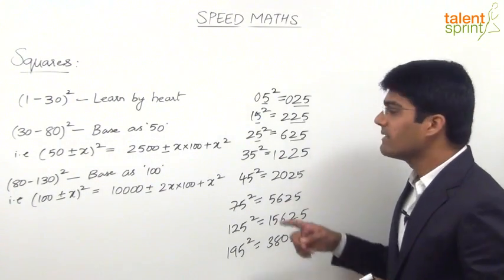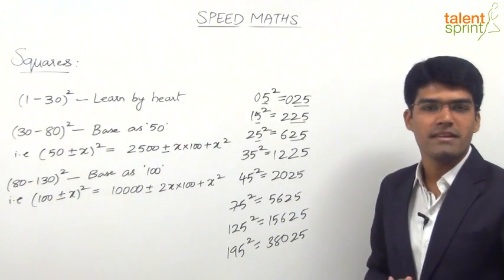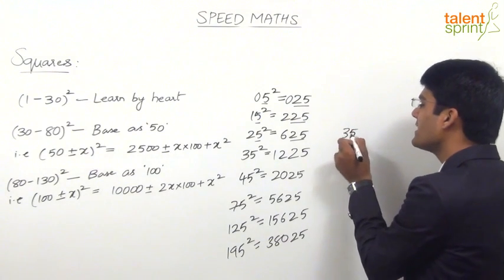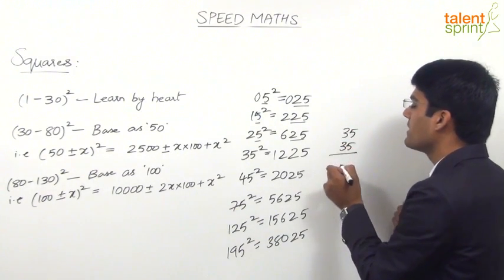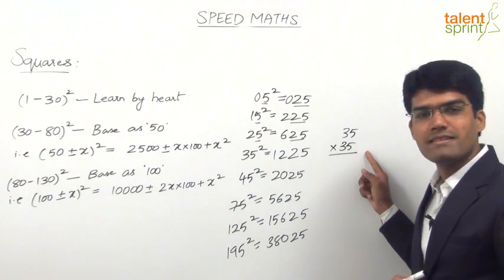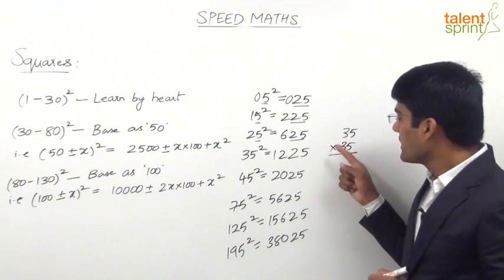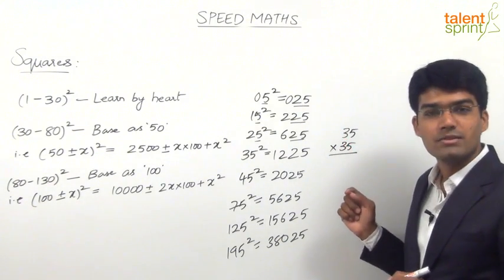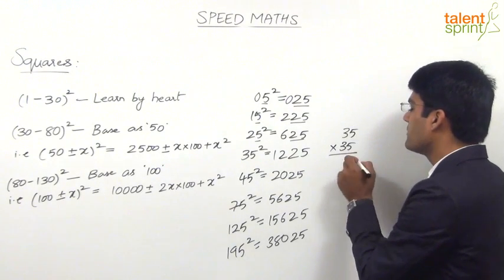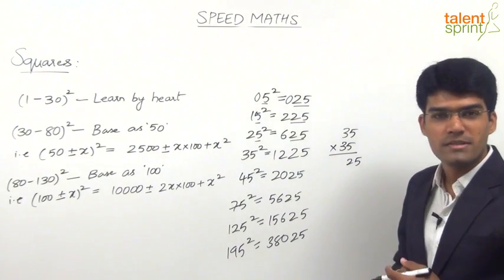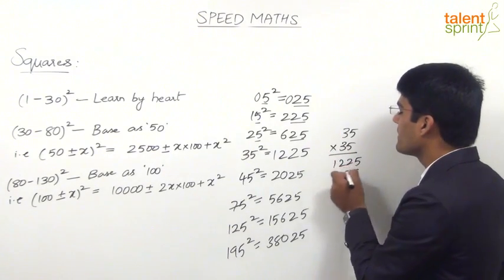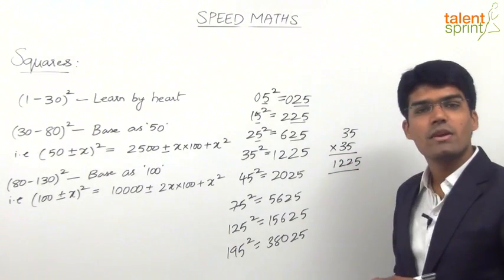If you observe properly, this is nothing but a case of multiplication of complementary numbers. For example, 35 squared is 35 into 35. The sum of the units digits is 10 (5 plus 5), and the remaining part of the number — the tens digit — is the same (both are 3). So these numbers are complementary. The answer is obtained as: units digits multiplied (5 into 5 = 25), then tens digit into the next digit (3 into 4 = 12), giving 1,225.